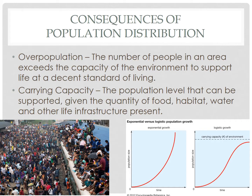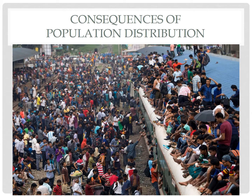Overpopulation is when the number of people in an area exceeds the capacity of the environment to support life at a decent standard of living. So if you have more people than resources to support them — things like food, drinkable water, breathable air, space — then that area would be considered overpopulated. A common misconception is to just look at the number of people, the arithmetic density, and assume an area is or is not overpopulated. That is a dangerous assumption. Overpopulation is based on the resources available, not just the number of people.